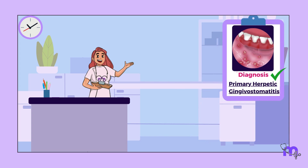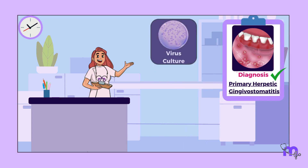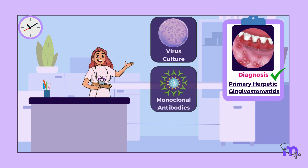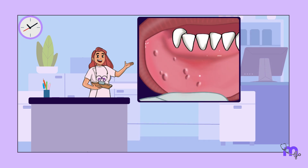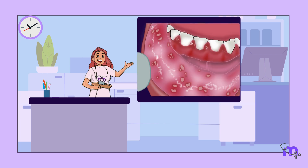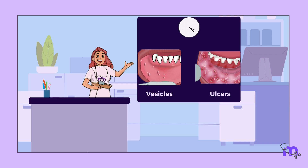Confirmatory diagnosis can be established by virus culture, immunologic tests using monoclonal antibodies, or DNA hybridization. But in these cases, diagnosis should be made as early as possible. If Ajo was in the initial stage, we would have seen distinct spherical grey vesicles, but by the time the case reached me, these vesicles had ruptured to form painful ulcers. Usually, it takes about 24 hours for a vesicle to turn into an ulcer.